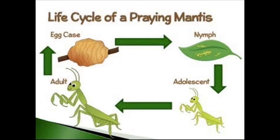A little later, the nymph resembles me more — the only thing it is missing is its wings. Even though you can't see them yet, there are tiny developing wing buds. These nymphs eat the same sorts of food as I do as an adult praying mantis: flies, aphids, moths, and other insects — just smaller.